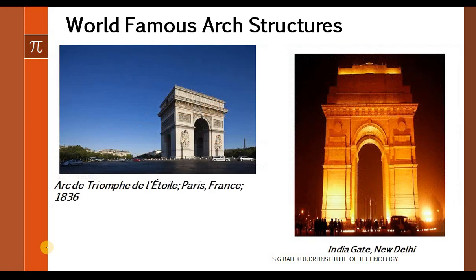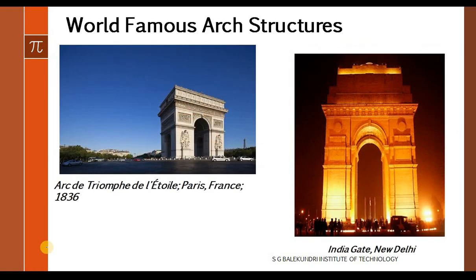Now let us see some very old manmade arch structures. On the left side you can see a structure in Paris, France, which was built in the year 1836, and on the right side you can see the arch structure situated in India which is also world famous — the India Gate, New Delhi. Apart from these, there are many arch structures, but these are the most prominent ones.